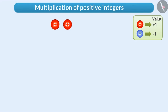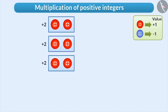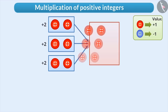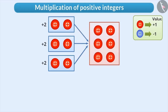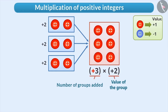Suppose we take two red buttons and make a group. Then the value of one group will be positive 2. If we make three such groups, then what will be their total value? In order to find this, we will add positive 2 three times. This can be expressed in the form of multiplication as positive 3 into positive 2. Here, the second number represents the value of the group and the first number including the plus sign represents the number of groups added.